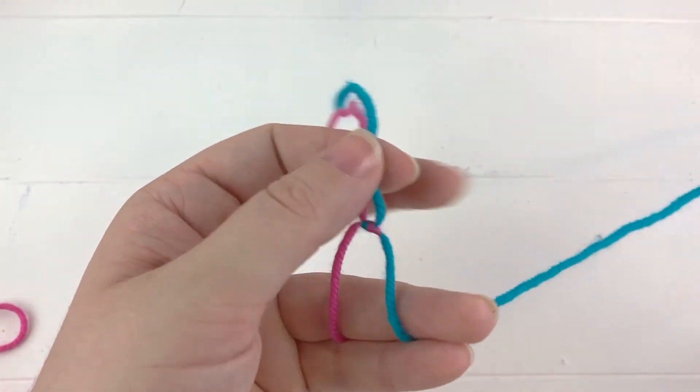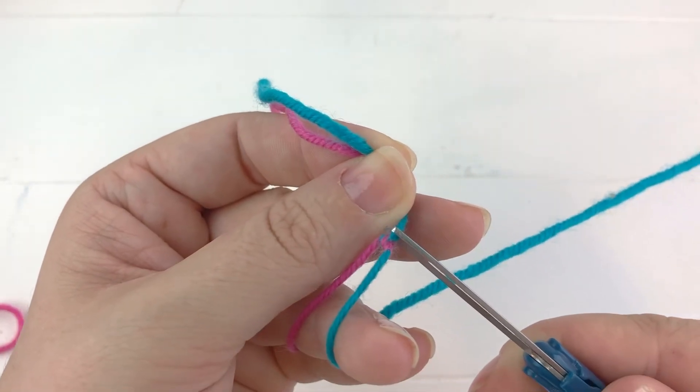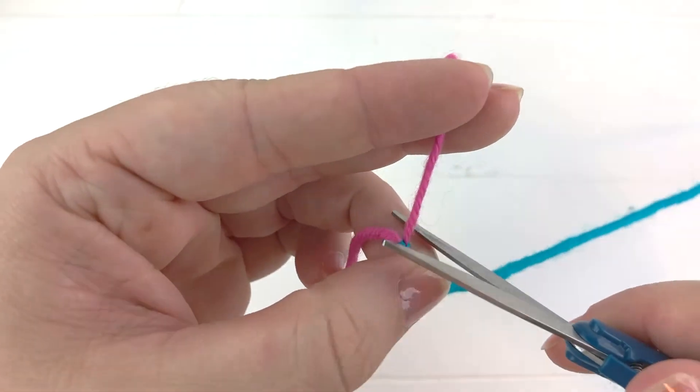Now I'm going to take the two small ends and trim them as close as I can to the knot, leaving about a sixteenth of an inch, a very small tail. You want to make sure you don't cut the knot, otherwise that will cause it to come undone.